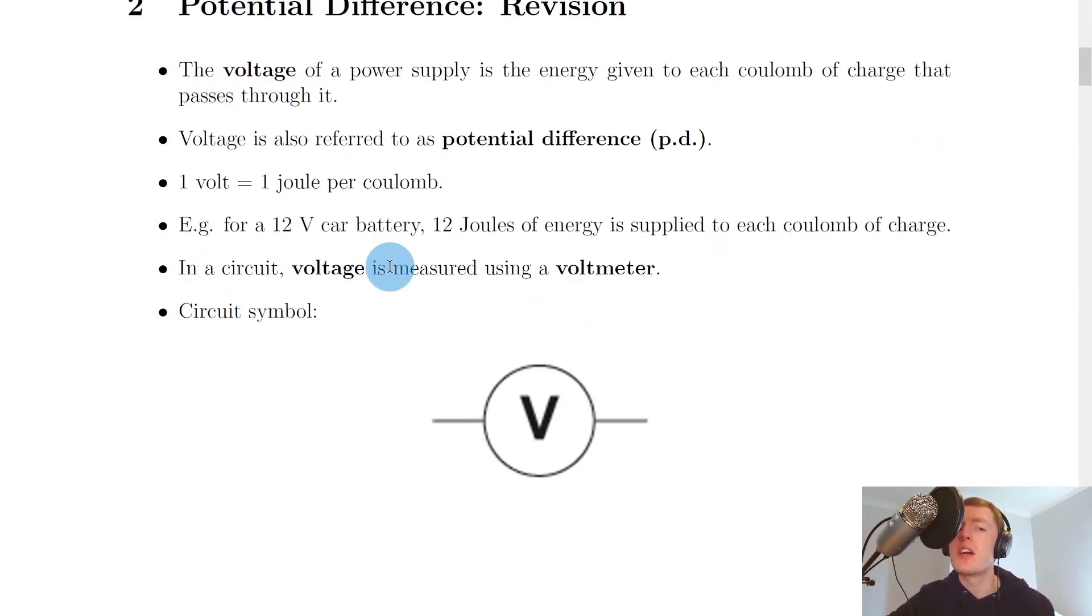For example, if you were asked what it means if a car battery has a voltage of 12 volts, you would need to say that 12 joules of energy is supplied to each coulomb of charge that passes through the battery.